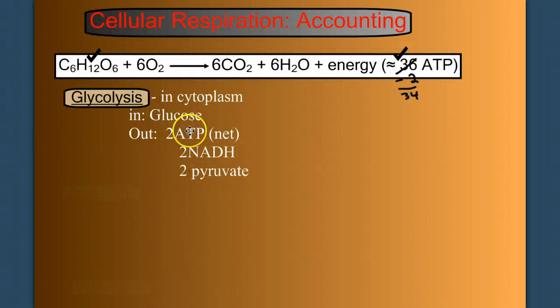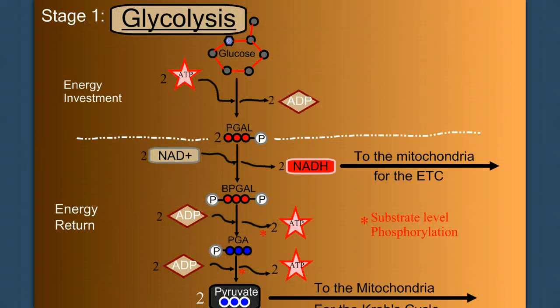At the end of our last video, we had finished glycolysis and taken an accounting. We had made two of our 36 ATP, but we hadn't gotten much else done. We'd broken glucose in half to pyruvate and made two NADH that are going to the electron transport chain. That'll be video three. But these two pyruvate head to the mitochondria for the Krebs cycle.